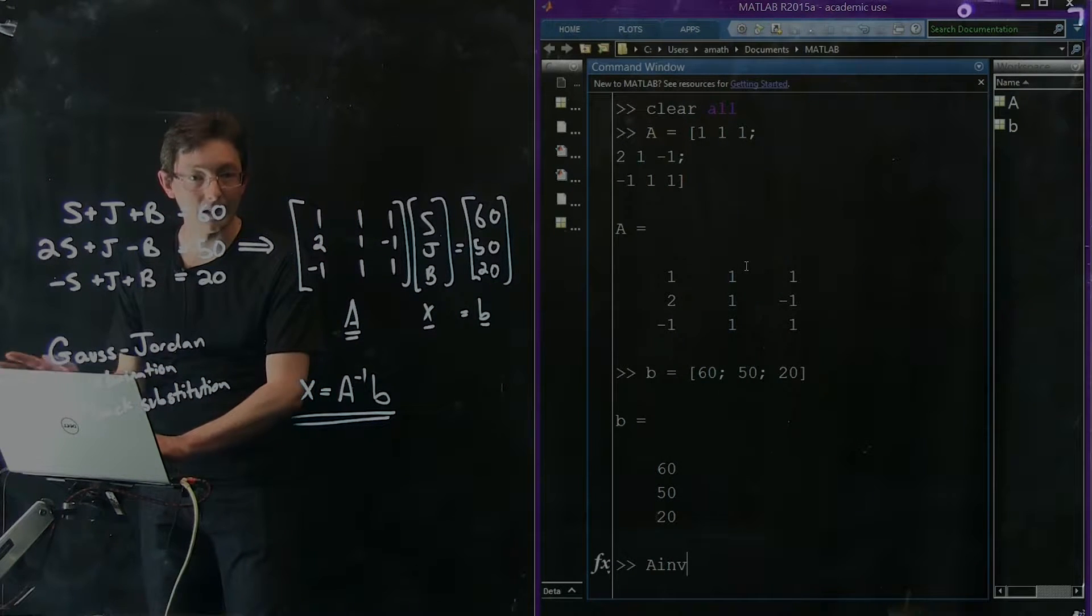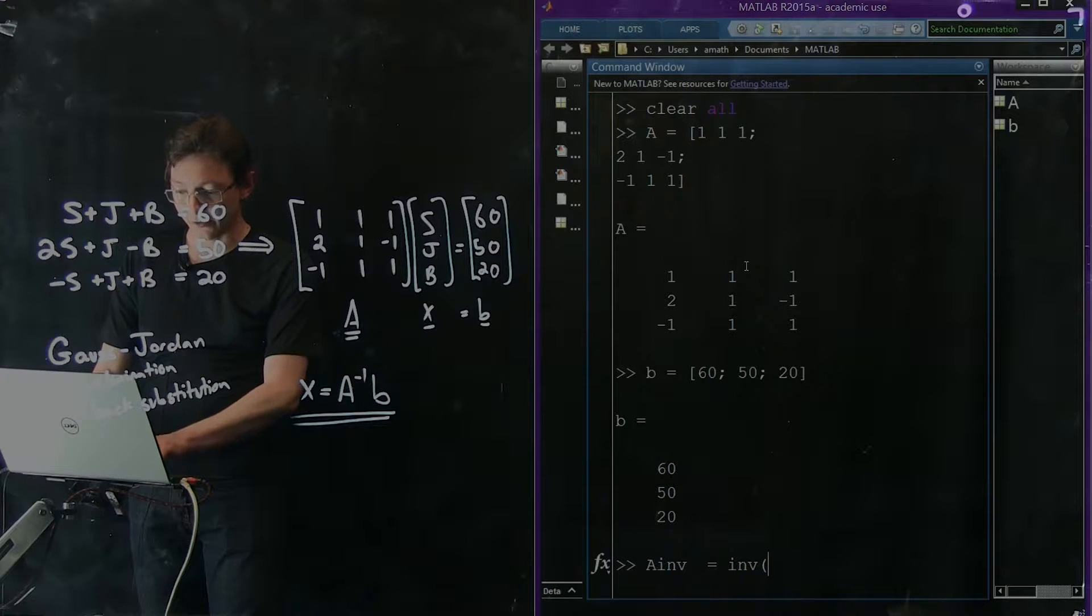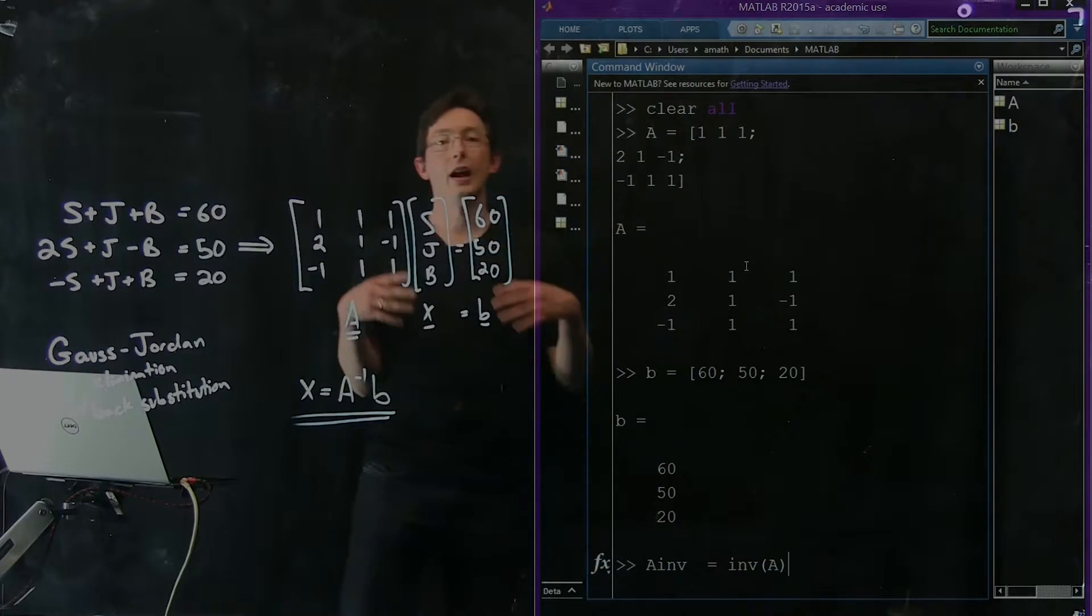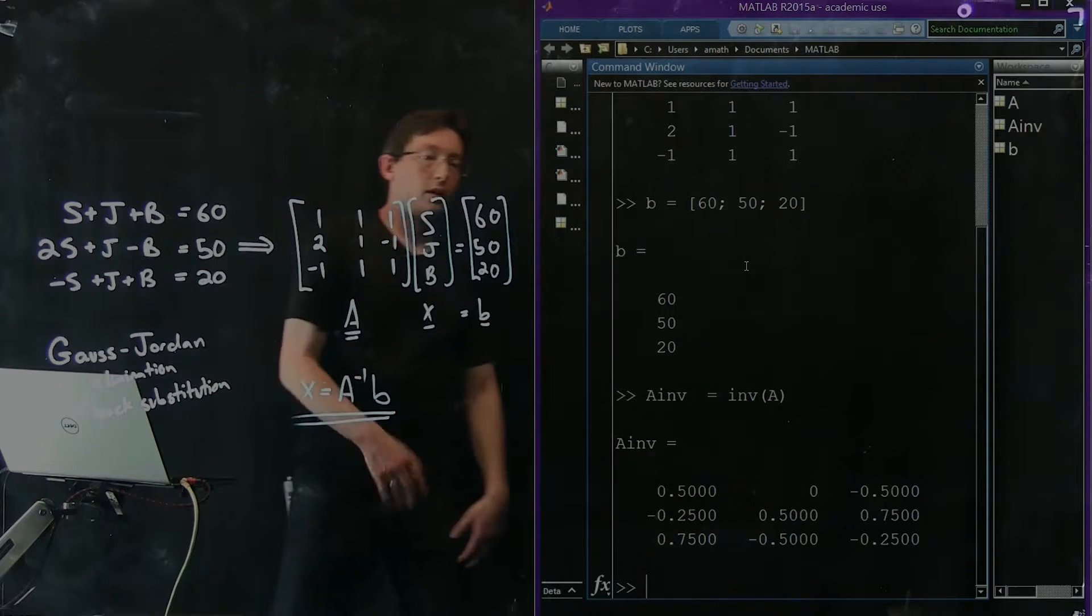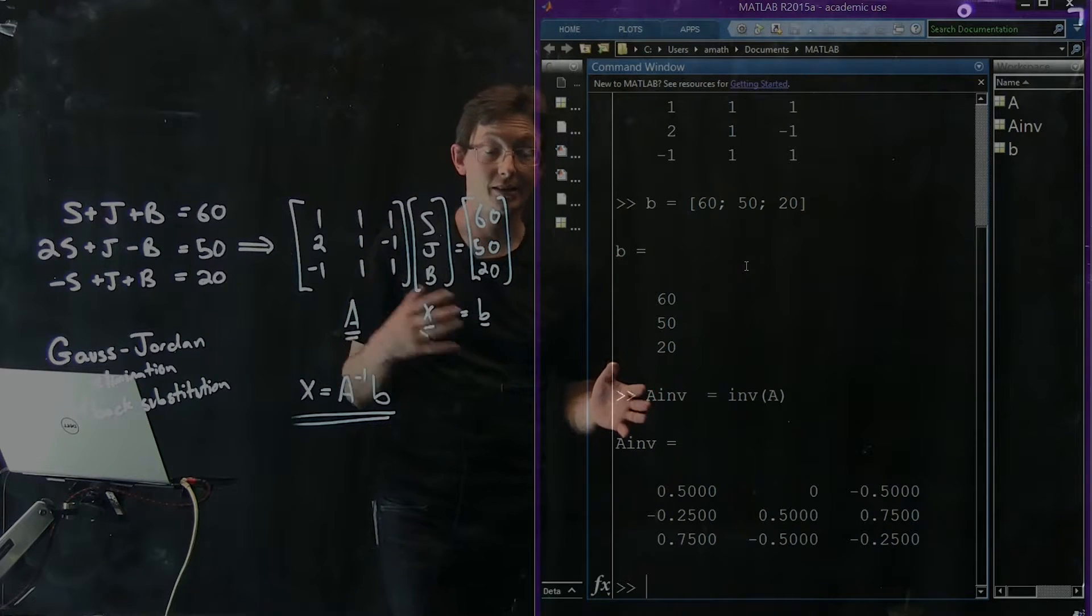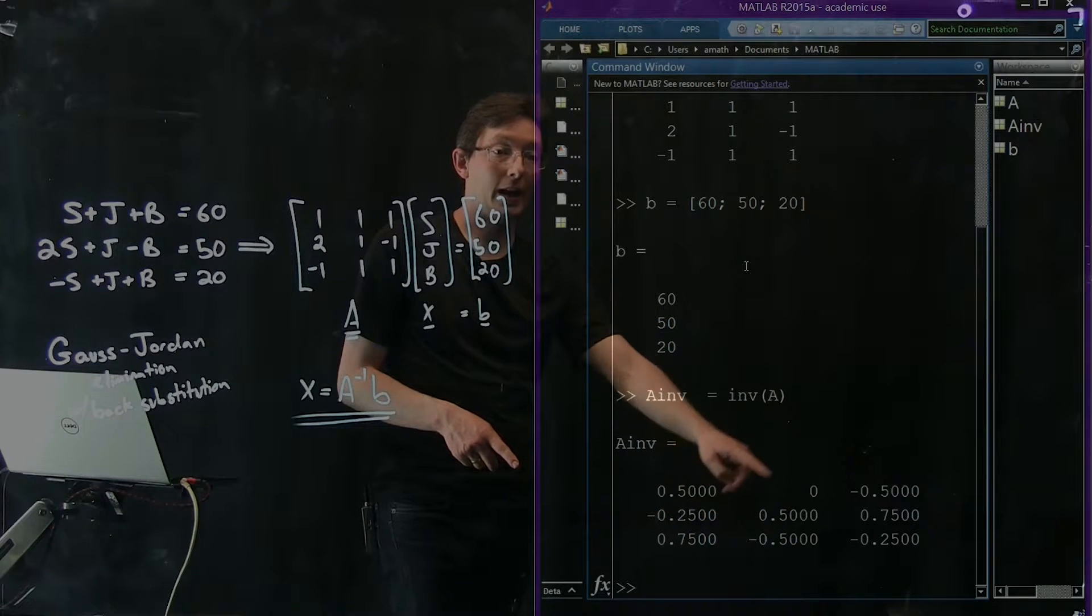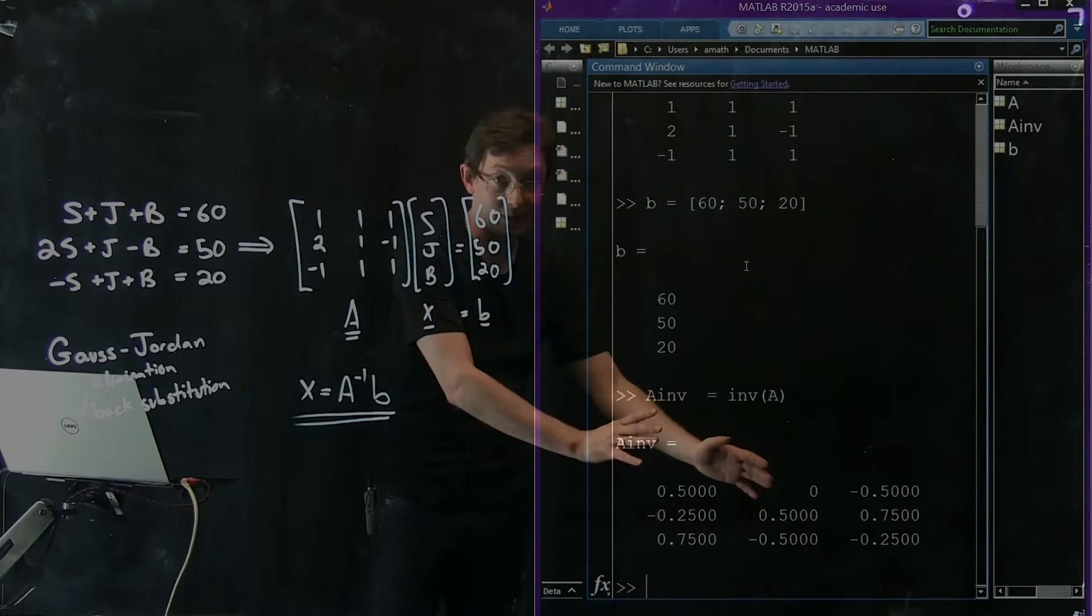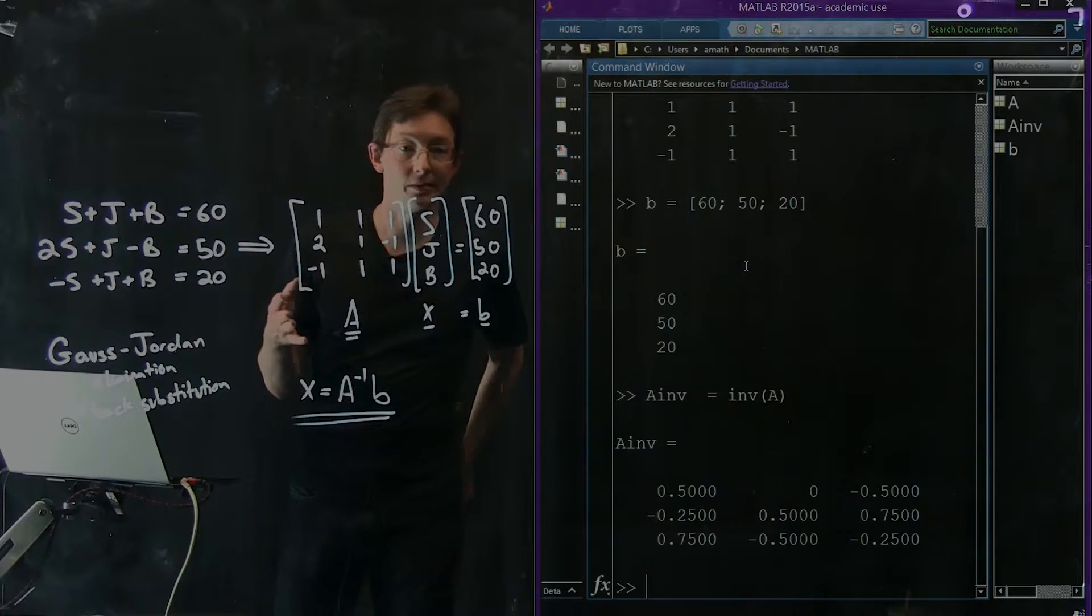The first thing we could do is compute the inverse of A. AINV equals the inverse of A. This is a built-in MATLAB function, INV of A, and it gives me the inverse of my matrix A. This is the inverse of A, and this should look familiar because we solved for this in the last part of this lecture. It's one-half, zero, minus a half, minus a quarter, one-half, three-quarters, three-quarters, minus a half, minus a quarter. This is the same A inverse we solved for before, painfully by hand using Gauss-Jordan elimination with back substitution.